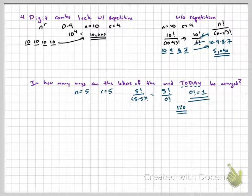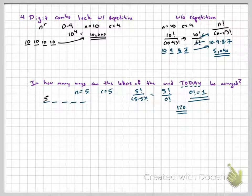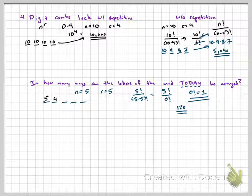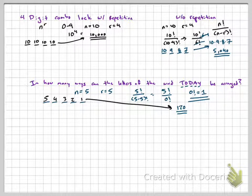Now, if I was using the FCP. 1, 2, 3, 4, 5. I have 5 options for my first letter. But then I only have 4 because I've already used a letter. 3, 2, 1. Notice that's 5 factorial. Same answer is over there.